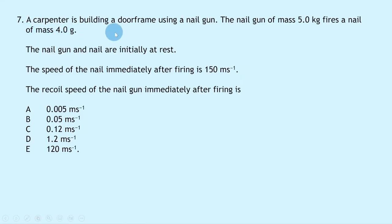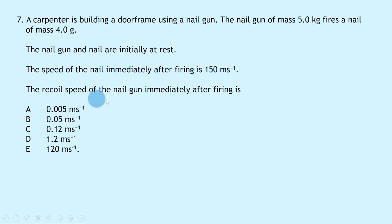Question 7 says a carpenter is building a doorframe using a nail gun of mass 5.0 kg that fires a nail of mass 4.0 grams. The nail gun and nail are initially at rest. The speed of the nail immediately after firing is 150 m/s. The recoil speed of the nail gun is? Because we have two objects initially combined that then separate, this is an explosion problem and we use conservation of linear momentum.